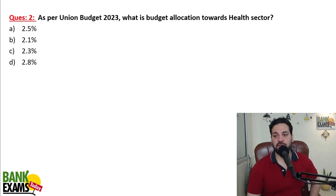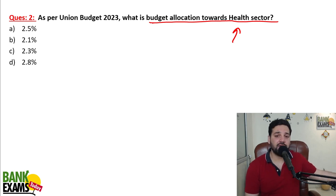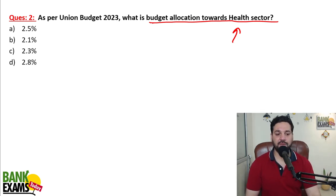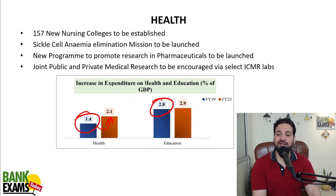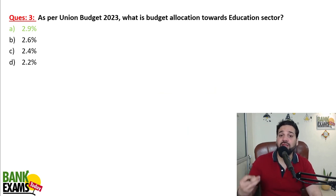As per Union Budget 2023, what is the budget allocation towards the health sector? Health sector pe budget allocation 2.1% of GDP hai — it used to be 1.4% of GDP but now it is 2.1%. Education pe pehle 2.8% tha but now it is 2.9%. Railways ka outlay, capital outlay, Jal Jeevan Mission outlay — yeh sara aapko yaad hona chahiye.